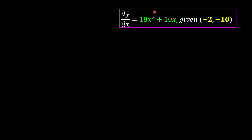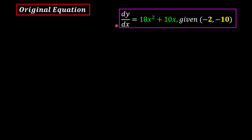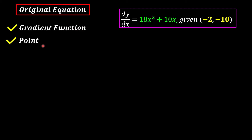Let's try one more time. Given the gradient function dy over dx equals 18x squared plus 10x, and given one of the points on the curve is negative 2, negative 10. Since we have both the gradient functions and a point on the curve, we can start. First, integrate the gradient functions in order to find the equation of the curve.